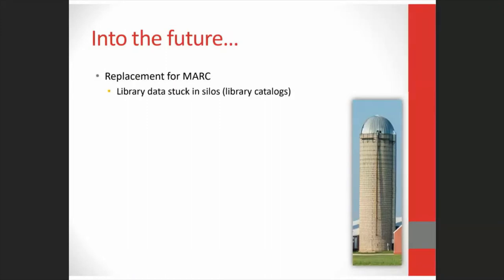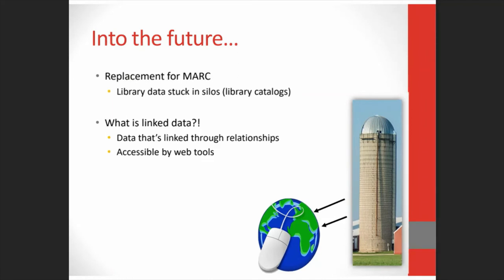MARC records have information that has value outside the record, such as author's names, subject headings, and series information — things that libraries do really well. But because our records are locked away in our catalogs, or as they like to term it now, our silos, using a standard that no web community uses, they can't be accessed by web tools like Google. So librarians are looking at linked data as a way to pull library catalog data out of the silos. Linked data is a way to help computers understand how data is linked to each other by creating relationships.